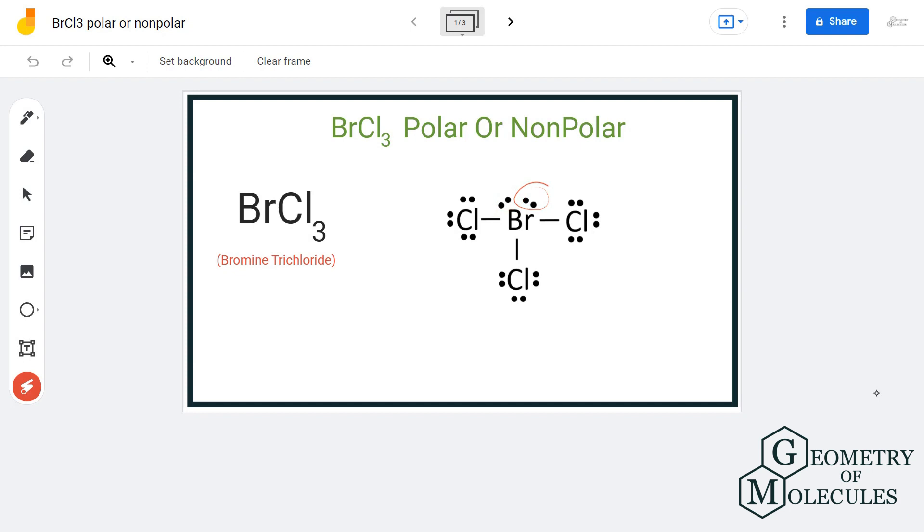There can be two poles formed in this molecule, in which the regions around chlorine will have partial negative charges and the regions around the bromine atom will have partial positive charges.